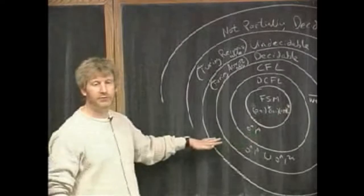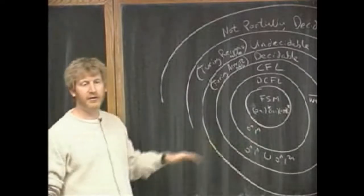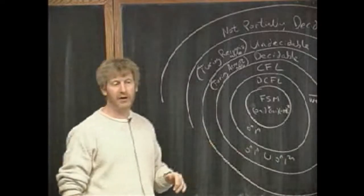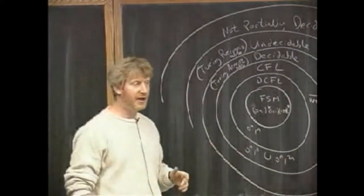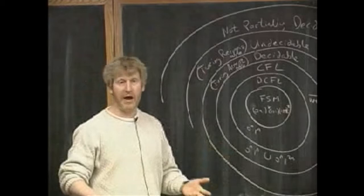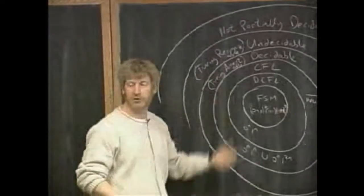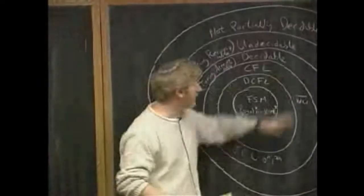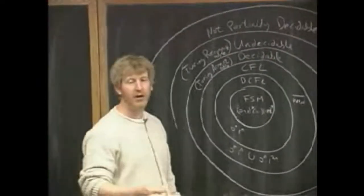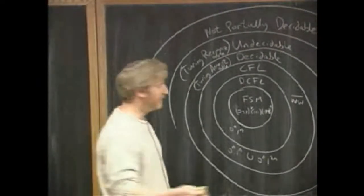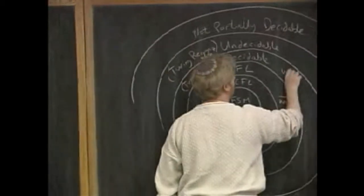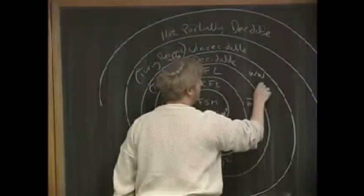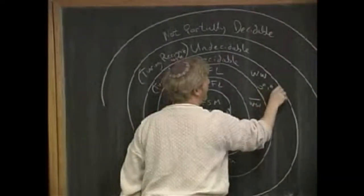Now we're going to move out to fancier sets — sets that we might not be able to recognize at all with any kind of computation, and sets that require a more powerful computation model than just a non-deterministic push-down machine. Moving out to Decidable, there are a lot of examples. One is ww. Another is 0^n 1^n 0^n.